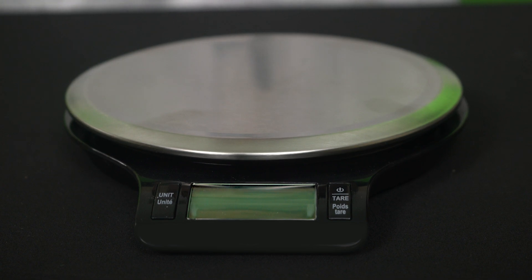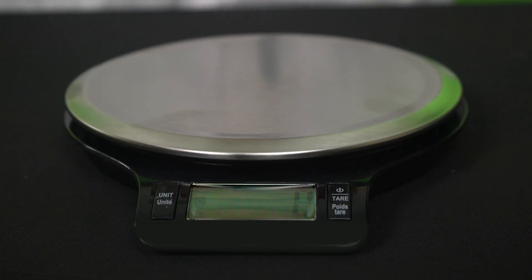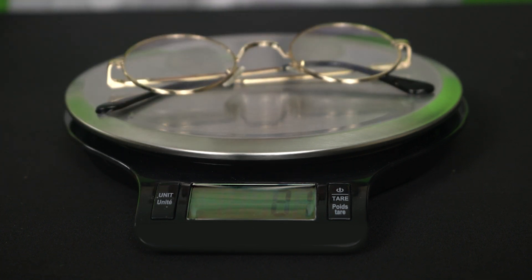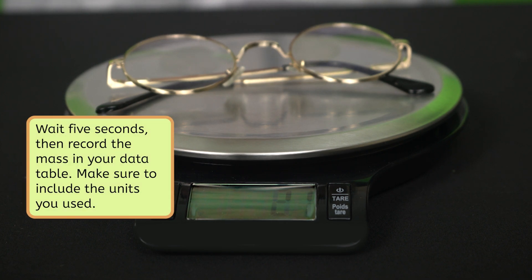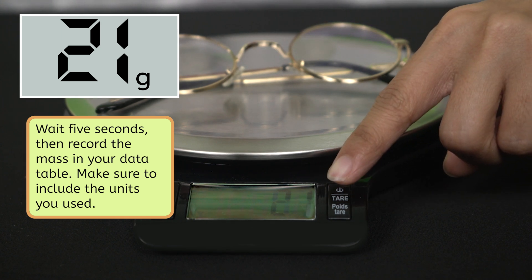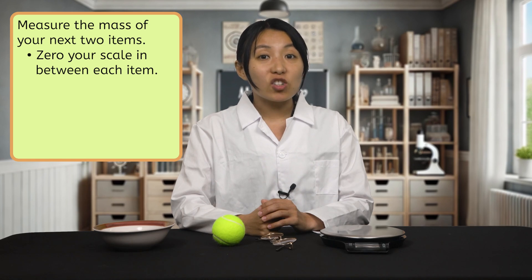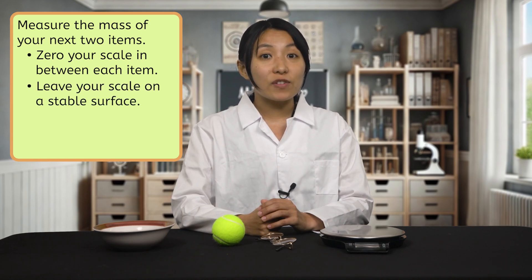Now that you've made your predictions, let's test them out by taking accurate measurements. Make sure the scale is on a flat, stable surface. If it's wobbly or tilted, your measurements might be off. Before you place your first item on the scale, make sure your scale is starting at zero. If you have a zero or tare button, press that to be sure that you're starting at zero. Once you've zeroed your scale, set your first item on the center. Wait five seconds to let the mass settle. Then record the mass in your data table. Make sure to include the units you used. Repeat this procedure to measure the mass of your next two items. Zero your scale in between each item to make sure your measurements are accurate. Be sure to leave your scale on a stable surface the whole time.